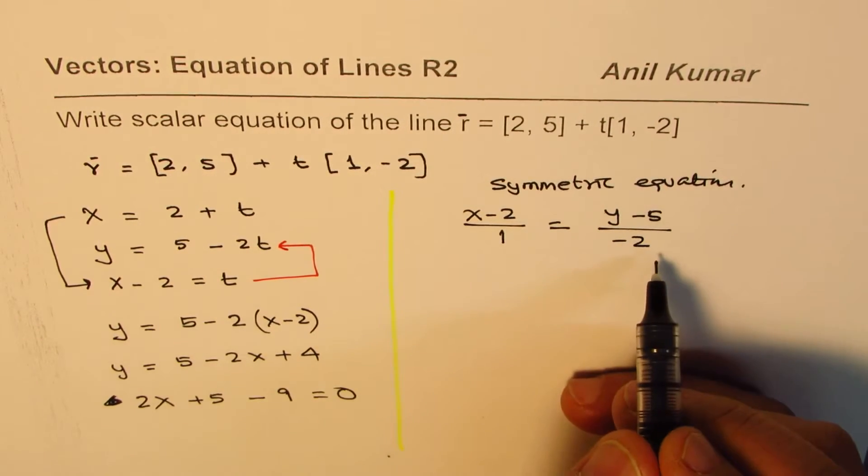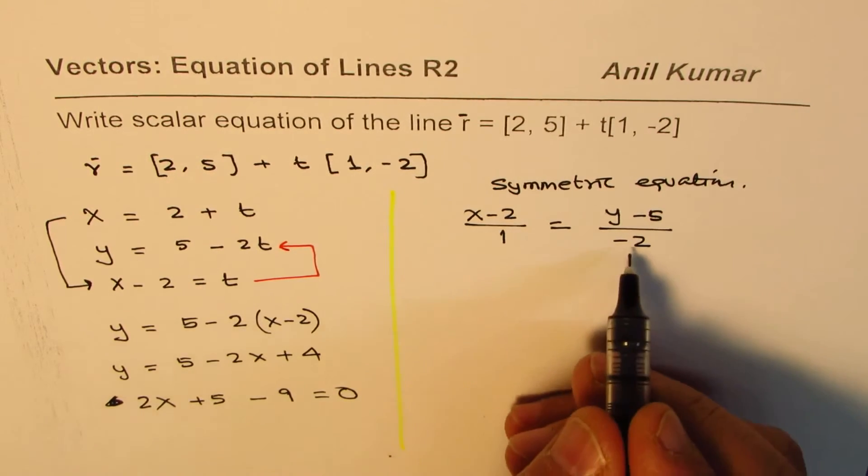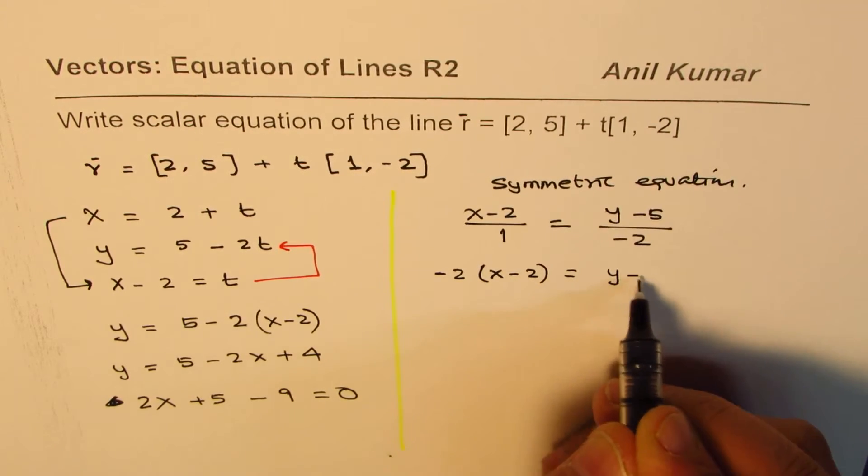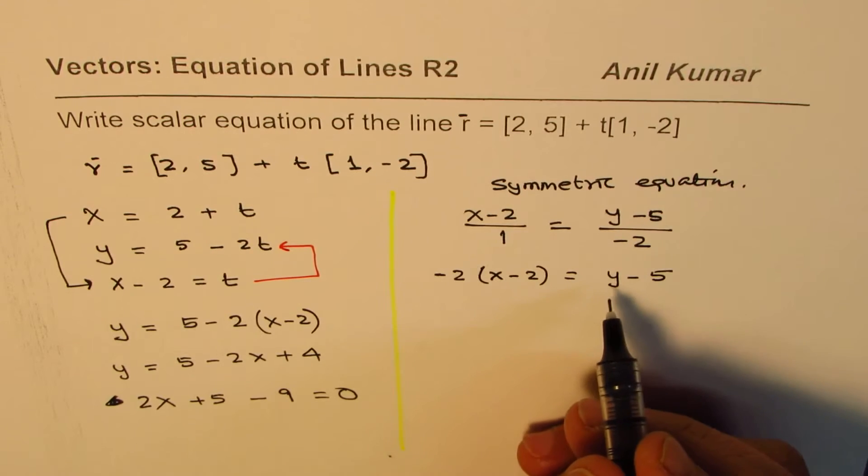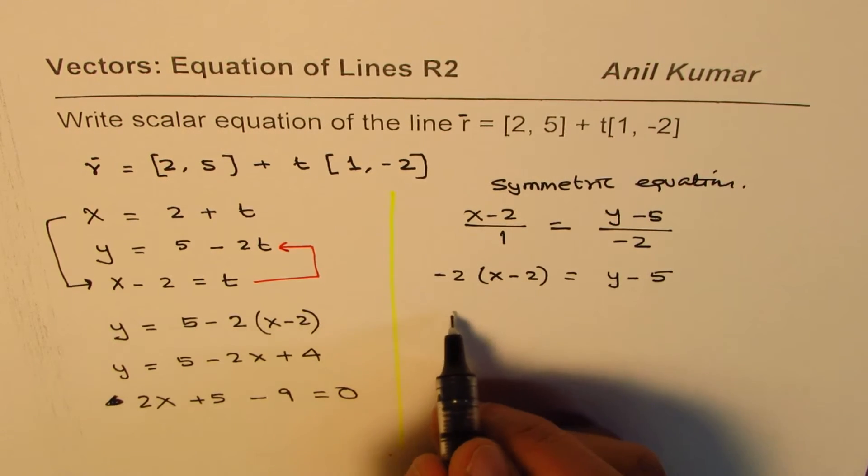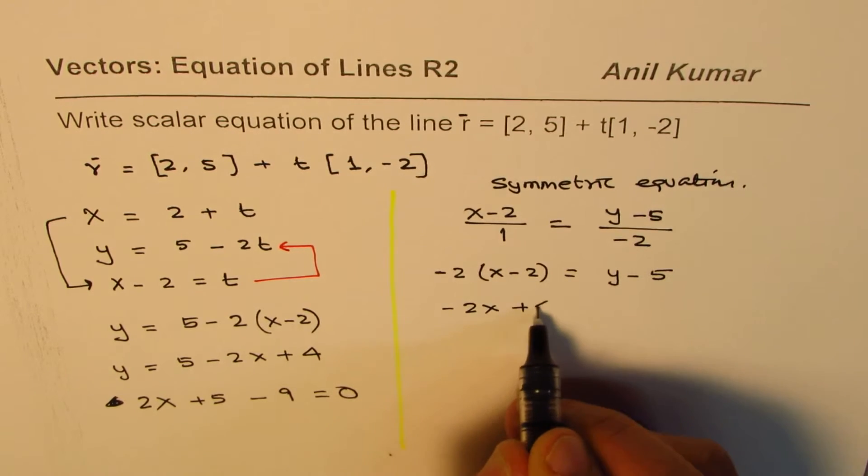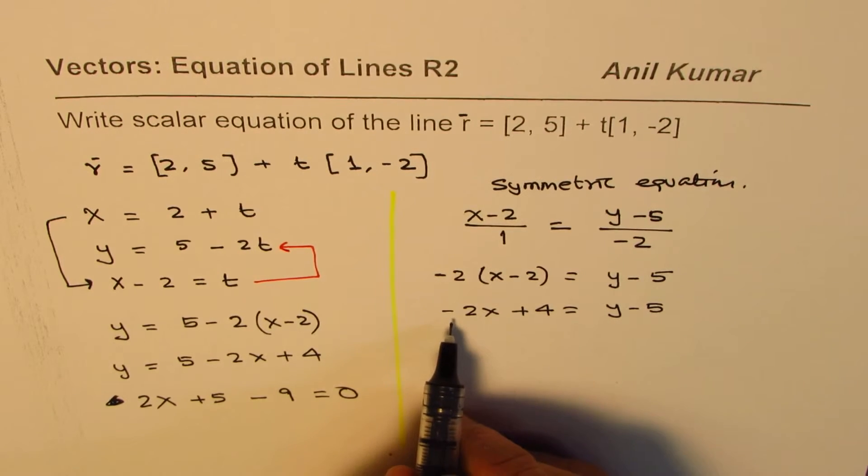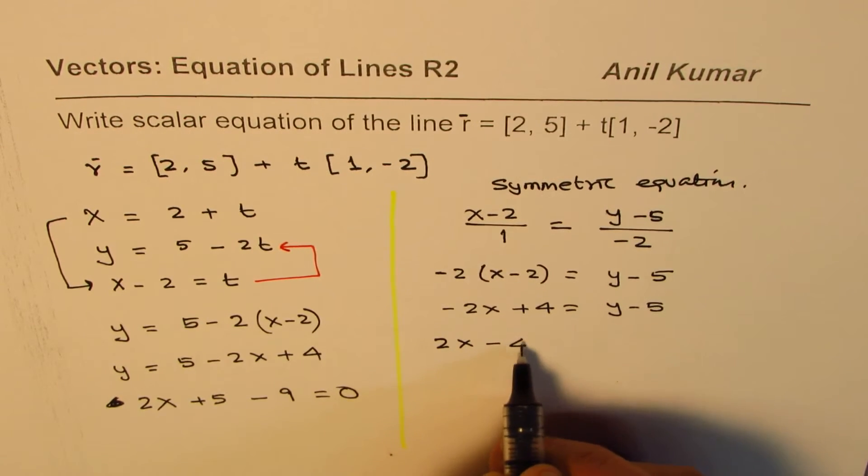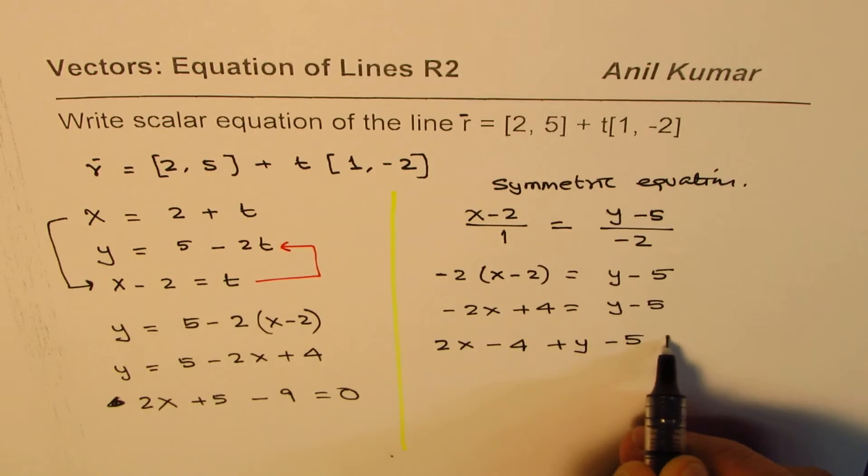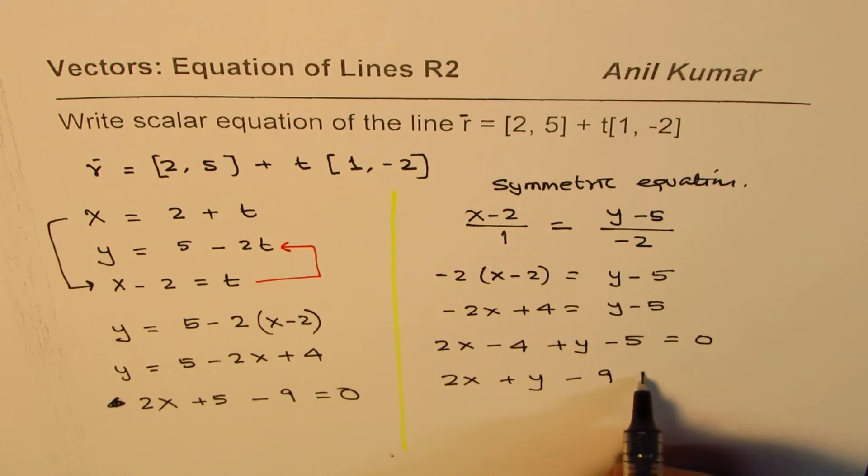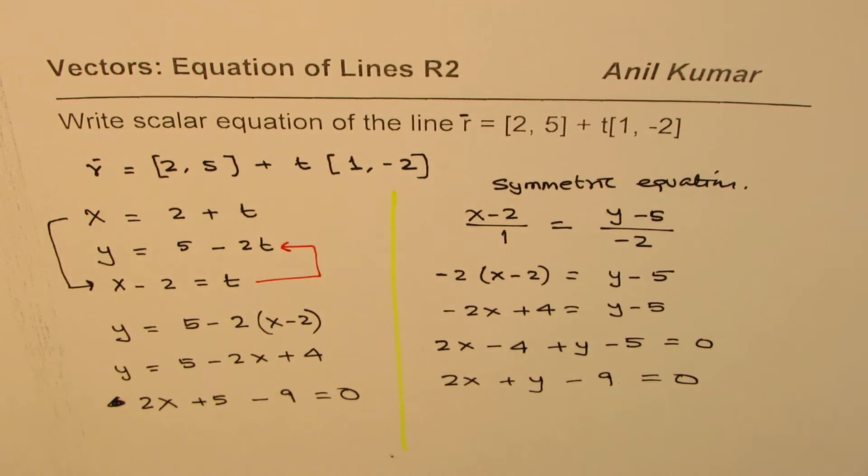If you write symmetric equation then you cross multiply. So you get minus 2 times (x minus 2) equals (y minus 5). Now you bring all the terms together after applying distributive property. We have minus 2x plus 4 equals y minus 5. Since we want to keep this as positive we'll take it to the right side. So we'll write this as 2x plus y minus 9 equals 0. So that is the second way of doing it.